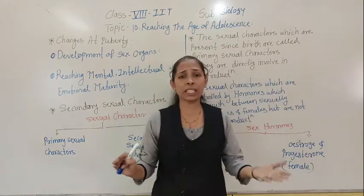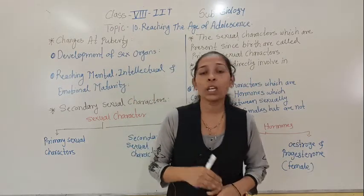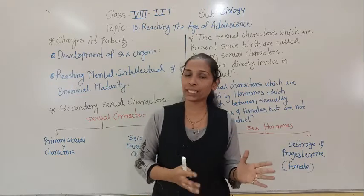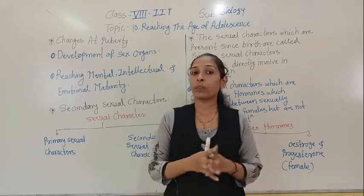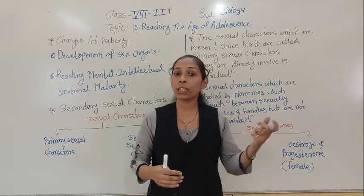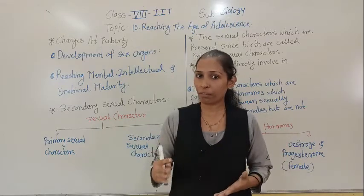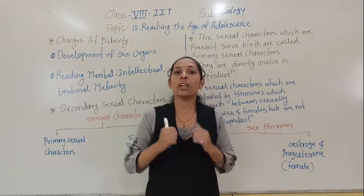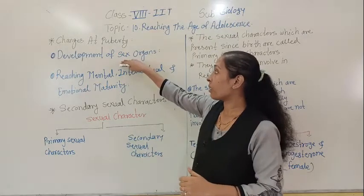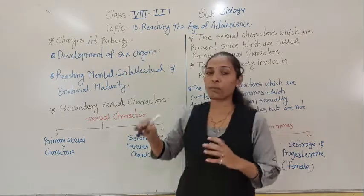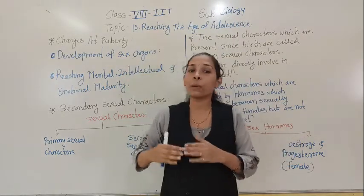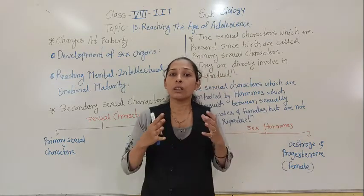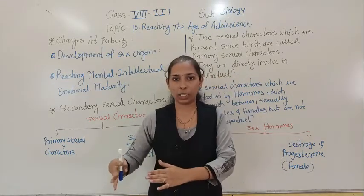In our previous lesson on reproduction in animals, we discussed about reproduction in males and females and also about the reproductive organs. So during the puberty period, this development of the sex organs takes place. It means the body becomes ready for reproduction, or the body reaches reproductive maturity.